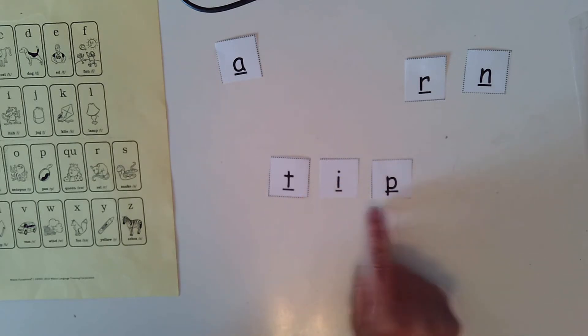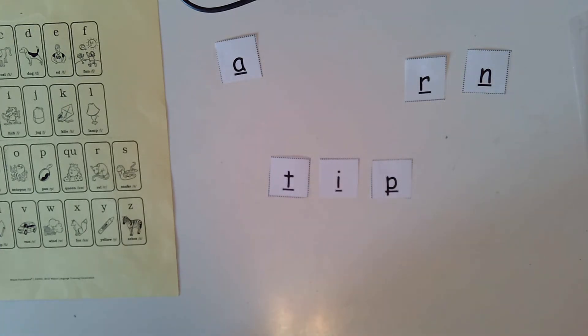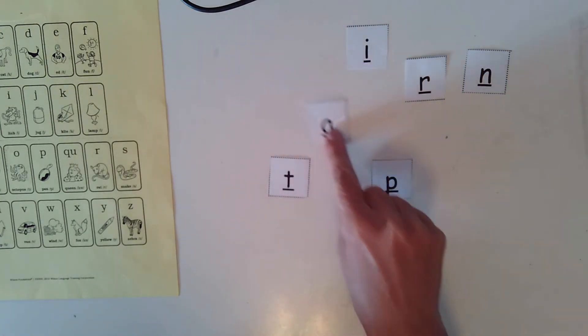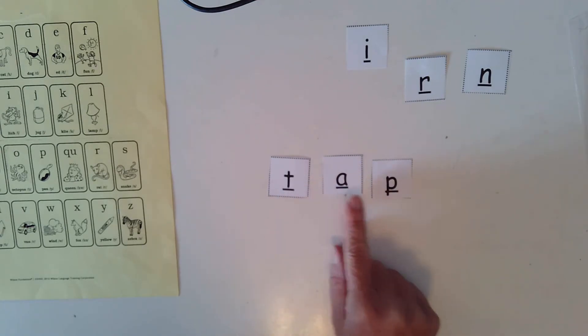This is the tip of the scissors. Tip. Oh, I'm going to change the middle sound again. I'm going to change my I to an A. So now I have t-a-p. What word did we make? Tap.